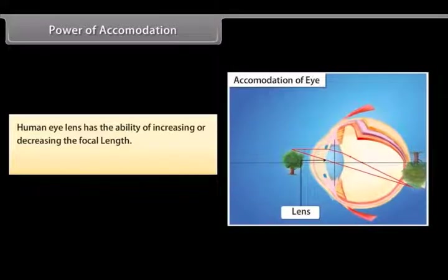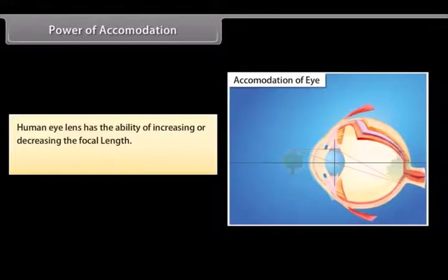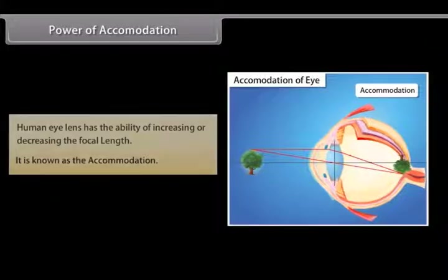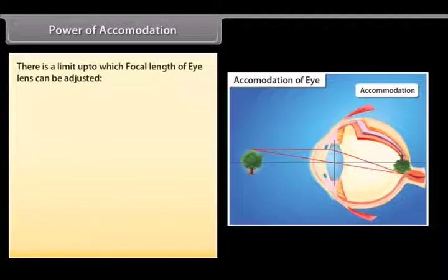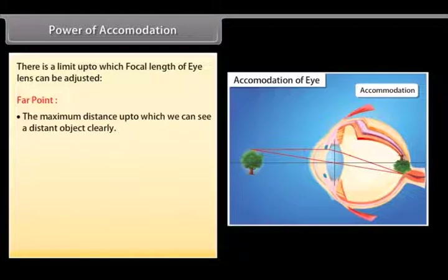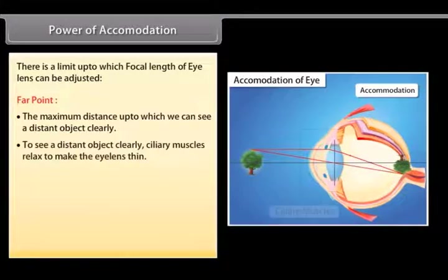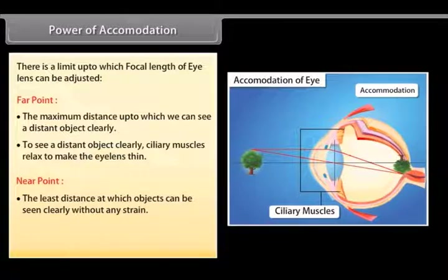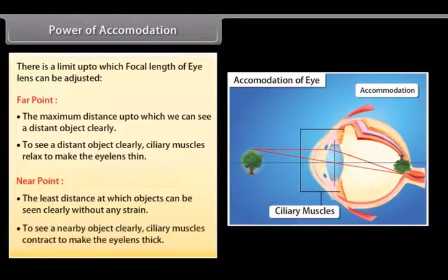Power of accommodation: The human eye lens has the ability to increase or decrease its focal length, known as accommodation. This is achieved with the help of ciliary muscles. The far point is the maximum distance up to which we can see a distant object clearly — ciliary muscles relax to make the eye lens thin. The near point is the least distance at which objects can be seen clearly without strain — ciliary muscles contract to make the eye lens thick.